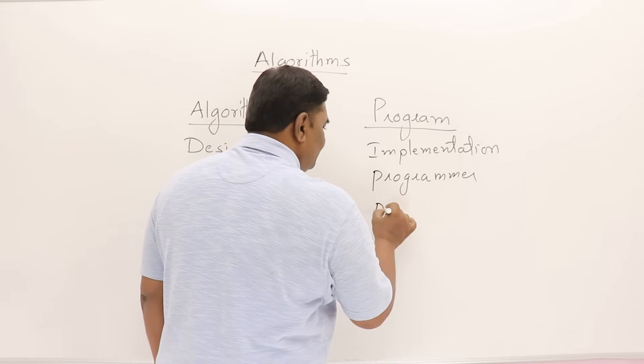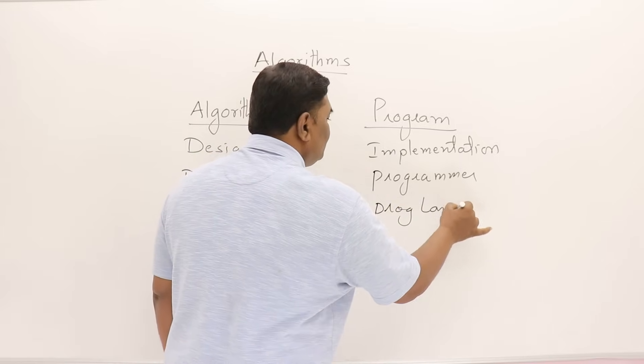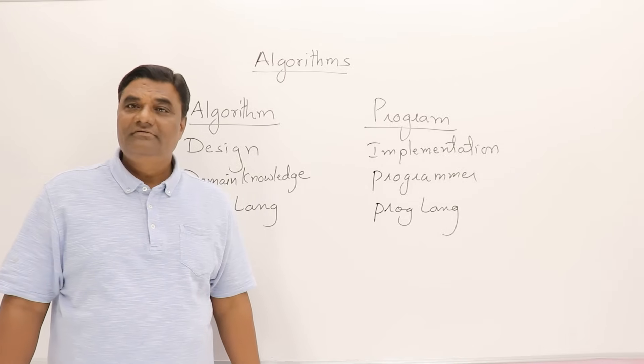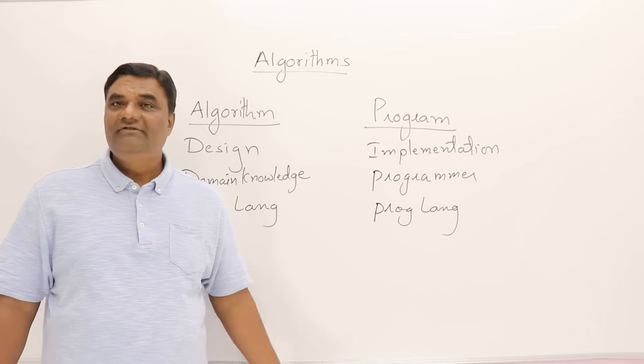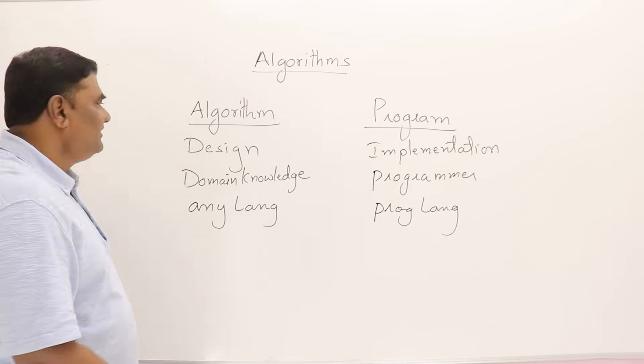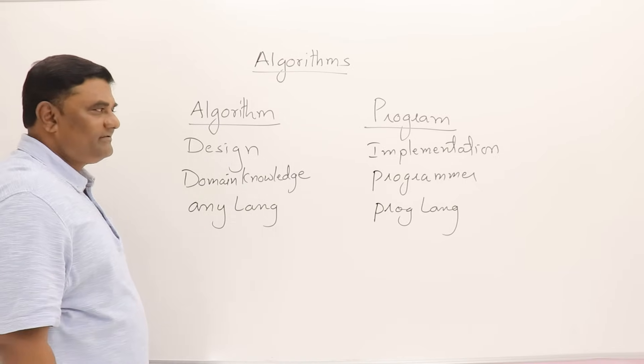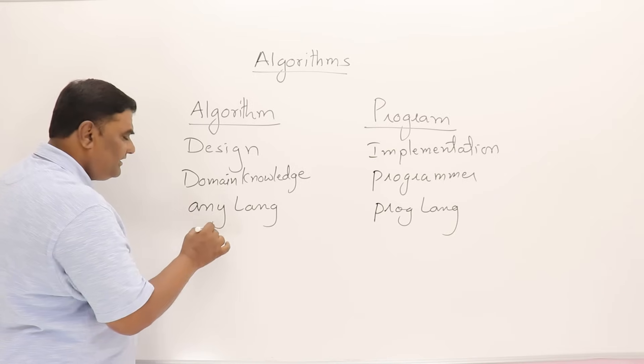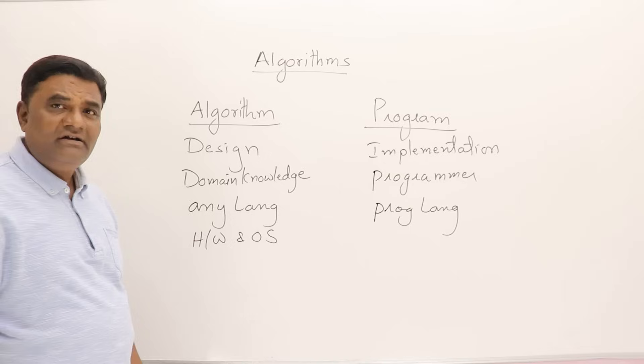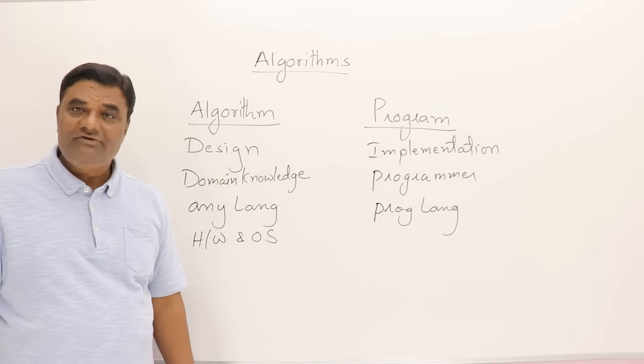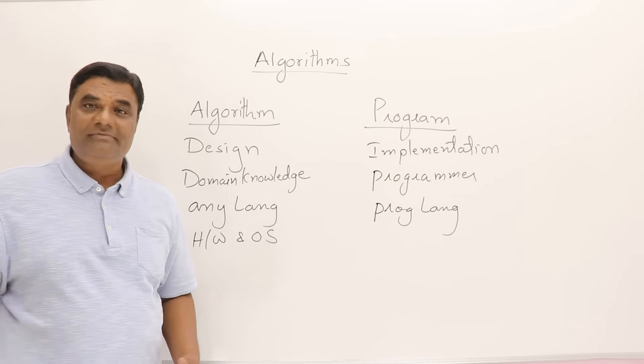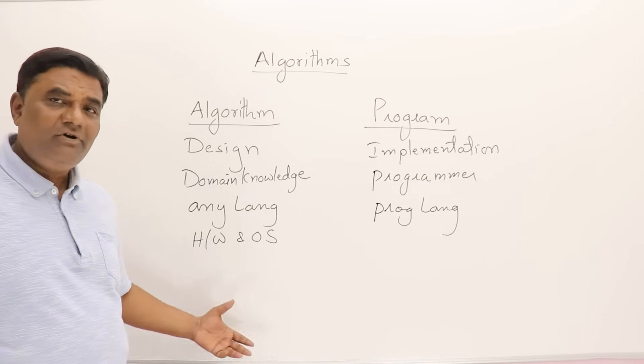Then this is written only using programming language. So you can use different languages for developing a program. The next, one more important thing here is. When you write an algorithm, it's going to be hardware and software, means operating system, independent. It's not dependent on hardware, what machine you are going to use, what's the configuration of the machine, and what's the operating system, either Linux operating system or Windows operating system. We don't bother about it.